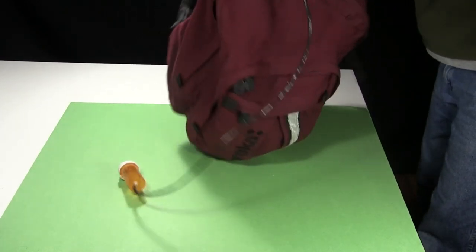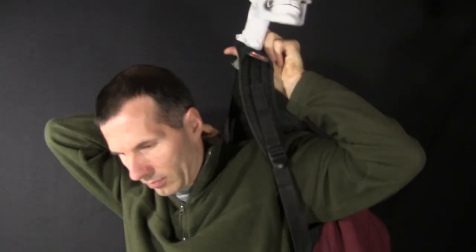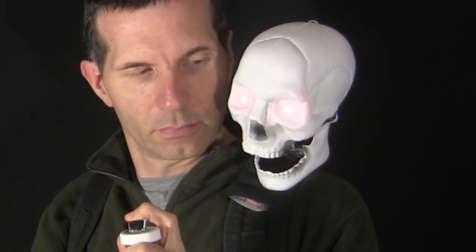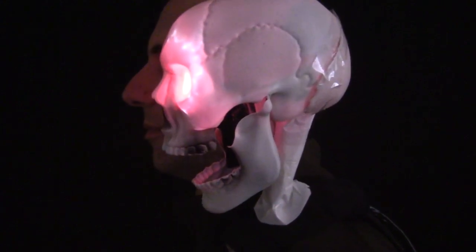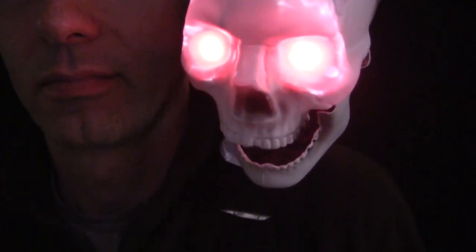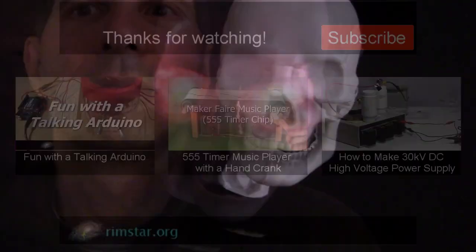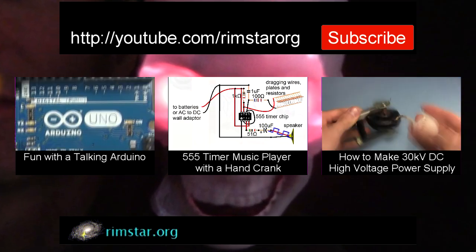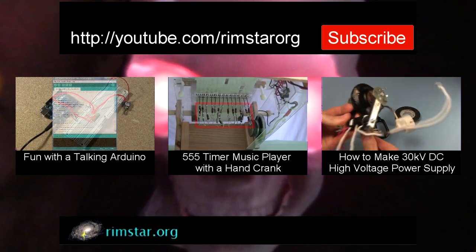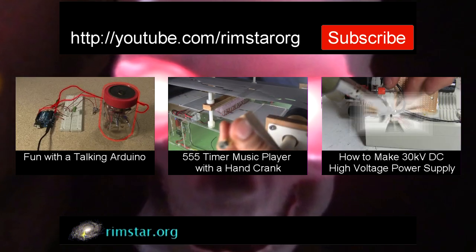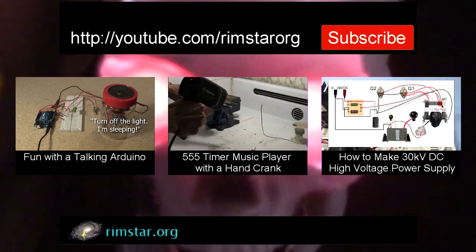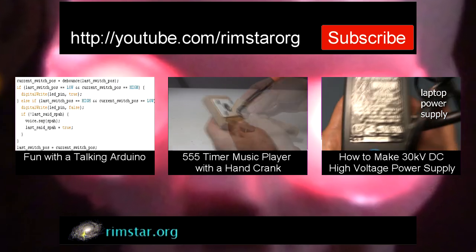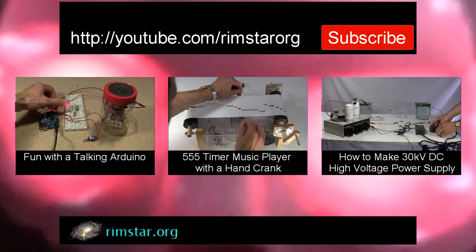Time to put it on. Well, thanks for watching. See my YouTube channel, RimstarOrg, for more neat videos like this. That includes another Arduino one, this time making a clock. Another showing my 555 timer chip music player that I cranked by hand. And for variety, one on how to make a 30kV high voltage DC power supply. And don't forget to subscribe if you like these videos, or give a thumbs up, share with your social media, or leave a question or comment below. See you soon!